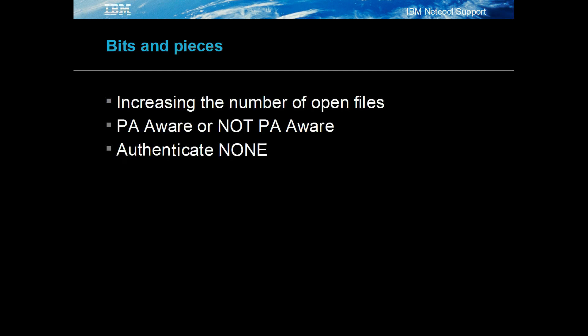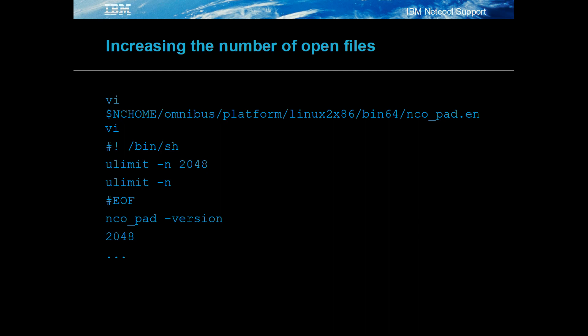As well as the general configuration, there are a few useful things to know. When performing lots of external actions, increasing the number of open files is required. You can set the number of open files for a shell using the binary's N file. For nco_pad, create or edit the nco_pad.Nfile and add in the required setting. Check the value is set by using echoes and the minus version option.